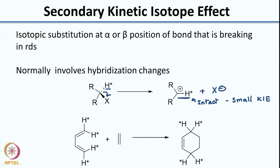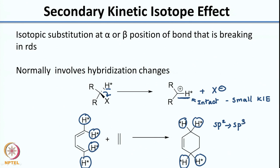Another example is a concerted process where hydrogens are substituted and in the product the hydrogens with the bond are still intact. But here there is a change from SP2 to SP3. So there is a hybridization change, and what is observed is that this also leads to a kinetic isotope effect. Clearly, the magnitude for a primary kinetic isotope effect would be larger than a secondary one. But you still observe a kinetic isotope effect whenever there is a change in hybridization — SP3 going to SP2 in the first example, and SP2 going to SP3 in the second.